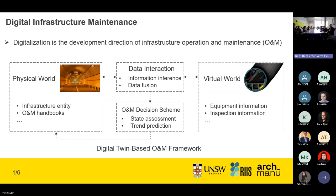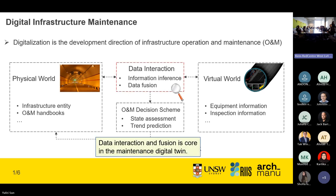Digitalization is the development direction in infrastructure operation and maintenance, which is called OM in short. The knowledge graph is a key technology. In the digital twin, information from the physical world is transmitted to the virtual world, including information from OM handbooks and from the infrastructure itself. After data fusion and interaction, the decision-making process is conducted and the infrastructure is maintained. In this framework, data interaction and fusion is the most important section.